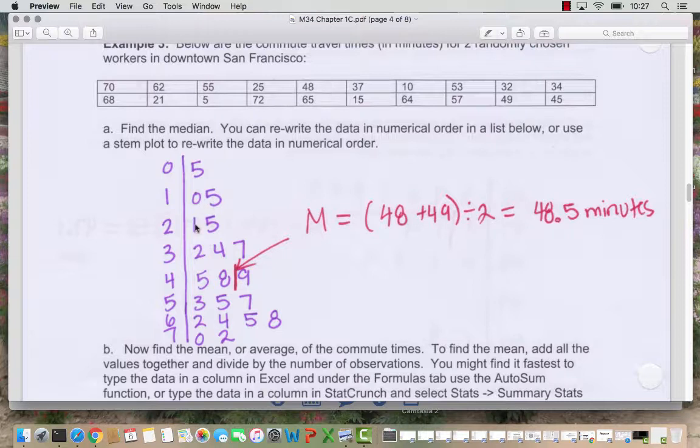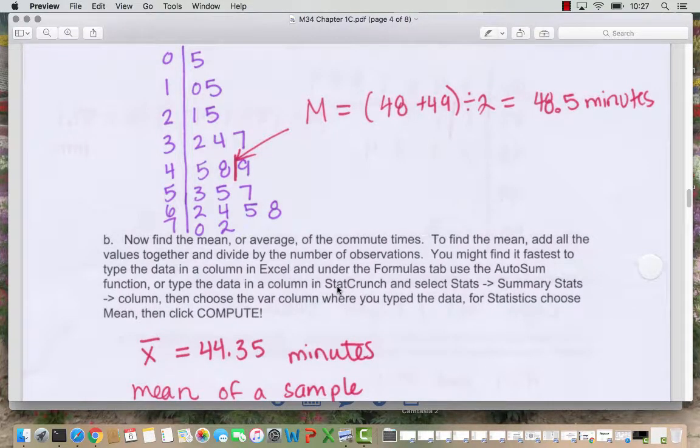So when we want to find the median the median is going to be between the tenth and the eleventh data points. So we count out one, two, three, four, five, six, seven, eight, nine, ten, eleven. We see here the median is between 48 and 49 minutes. So when we add these up and divide by two we find the median is 48.5. So 48.5 isn't a data point in our data list. So the median isn't one of the data points. It's like a fence here between 48 and 49 minutes.